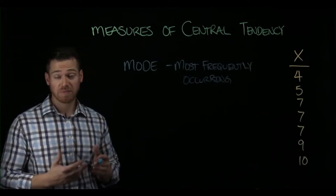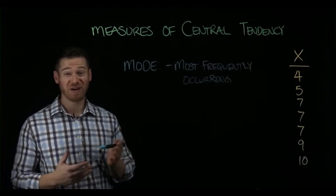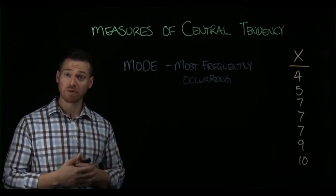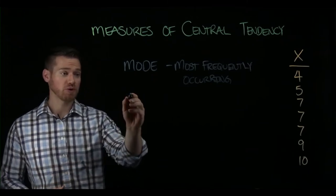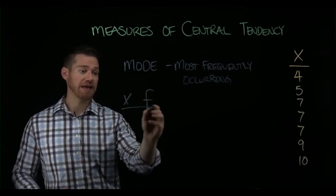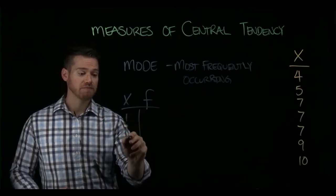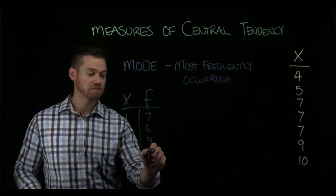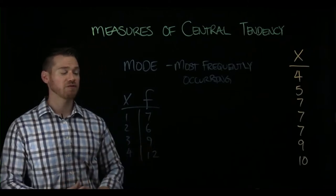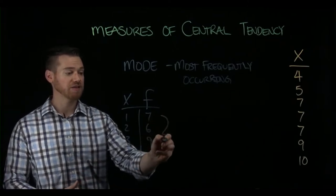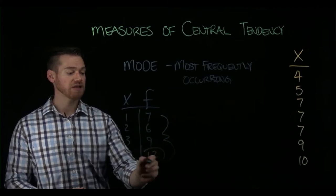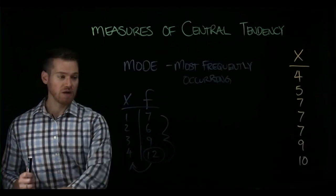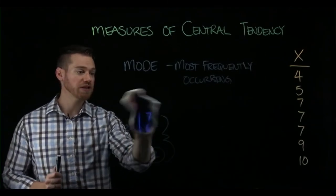What this means is basically that it is whatever value has the highest f, the highest frequency. So if you had a frequency table with X and f, you would simply look for which of the f's is the greatest. In this case, because f of 12 is the largest, the mode would be four.